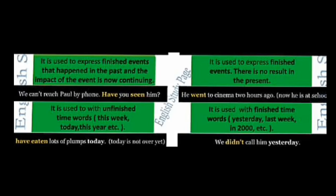अब देखते हैं कि Present Perfect tense का use और कहाँ पर करेंगे — it is used with unfinished time words: this week, today, this year. इसका example देखते हैं: 'He has eaten a lot of plums today.' Today is not over yet — means कि वो आज बहुत सारे plums खा चुका है, और today अभी खत्म नहीं हुआ। ऐसा unfinished work जो अभी का बात कर रहा हो — this week, today, this year — इसके लिए Present Perfect का use करेंगे।